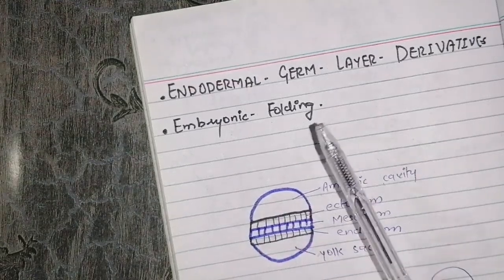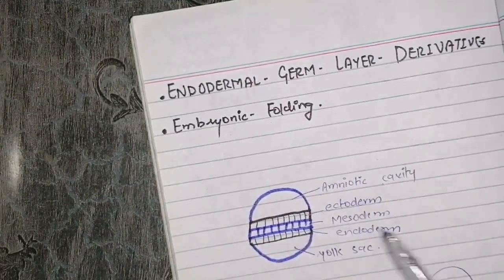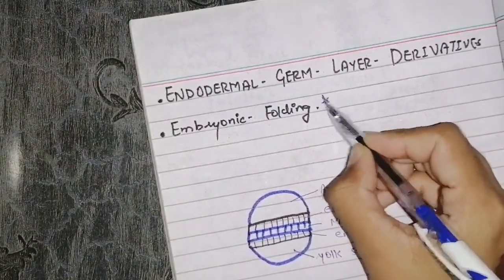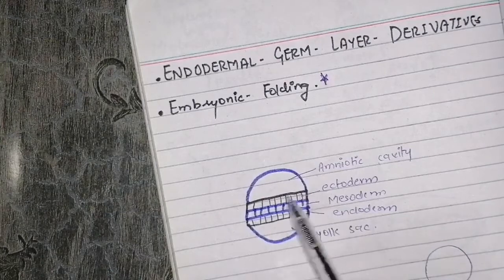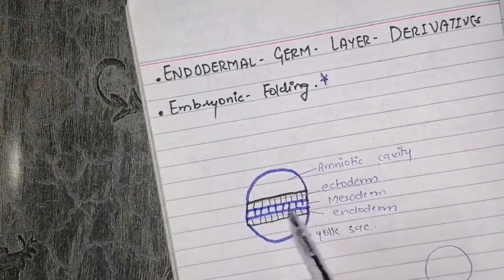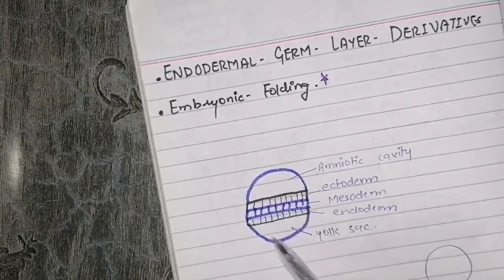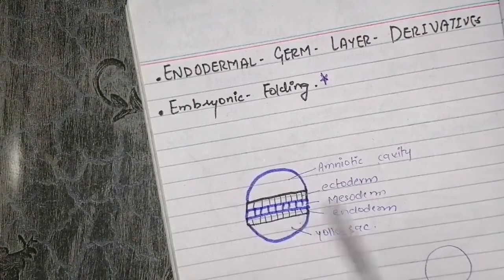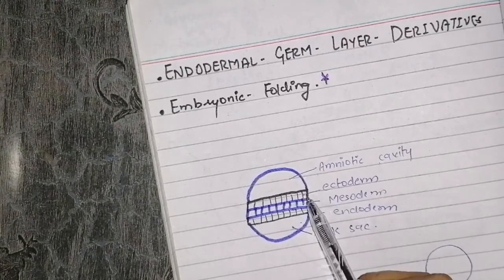Okay students, now we have endodermal germ layer derivatives that we have to see in this video, along with the embryonic folding topic which is very important. We have 3 germ layers and 2 cavities. We have an amniotic cavity and yolk sac which we have previously studied. Ectoderm derivatives we have discussed in a previous video, which were very easy.